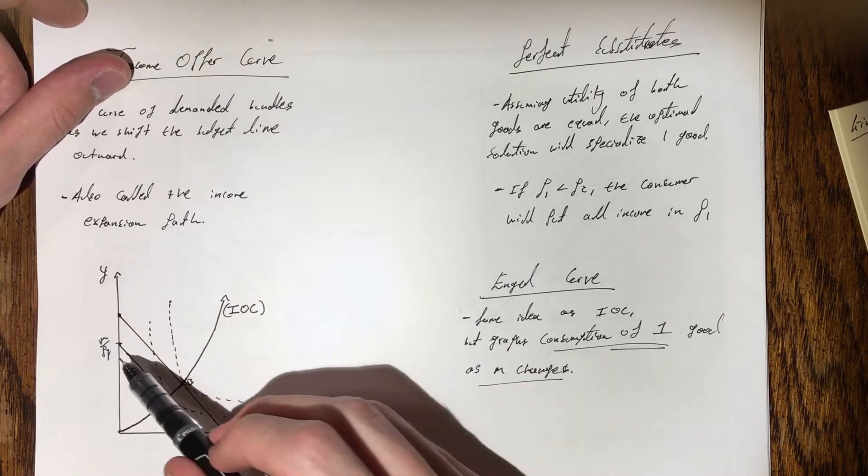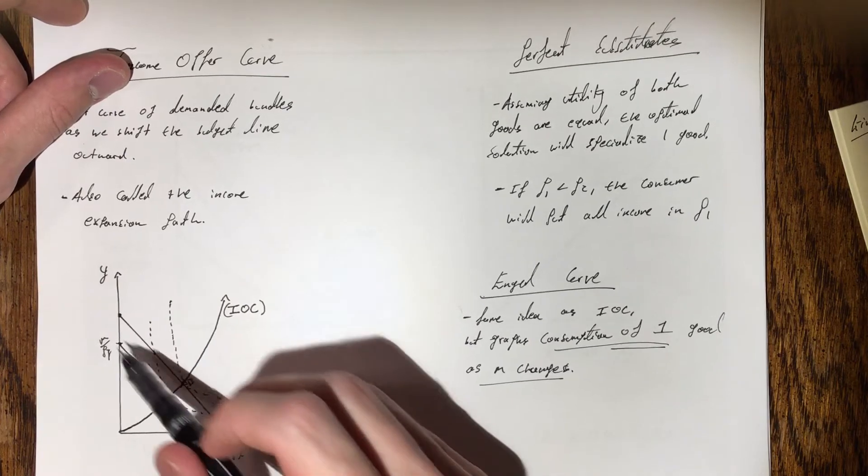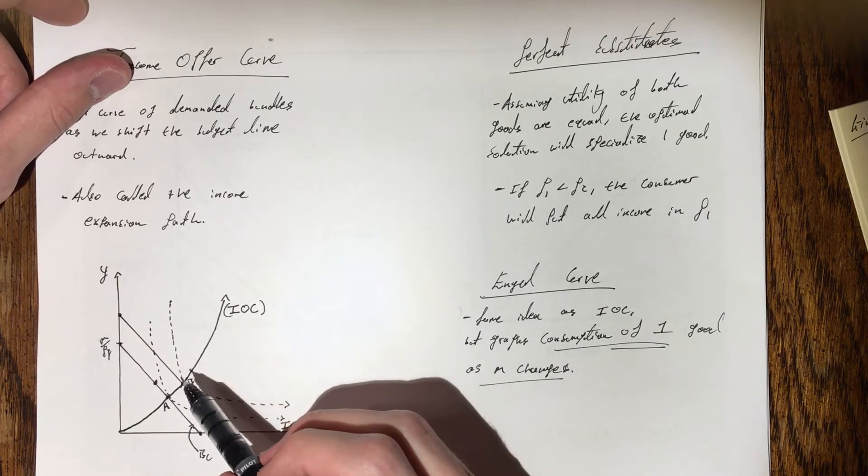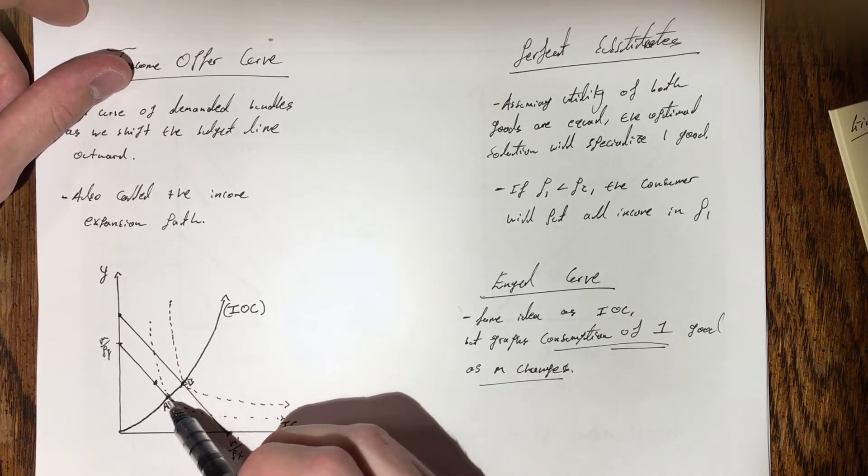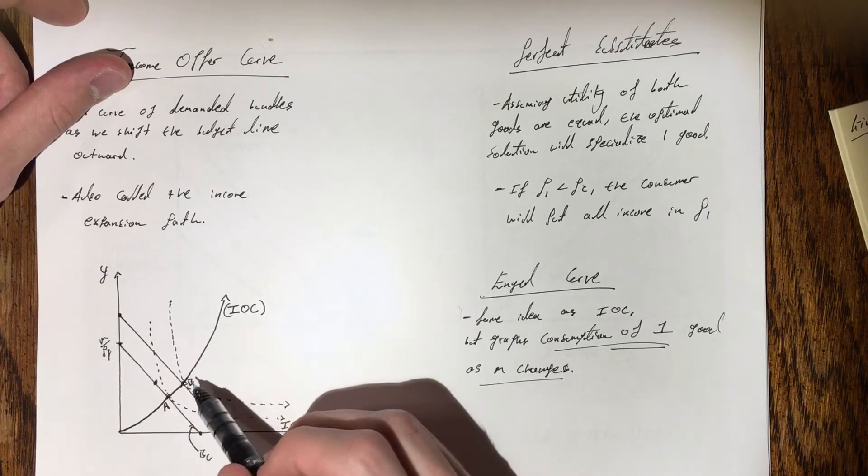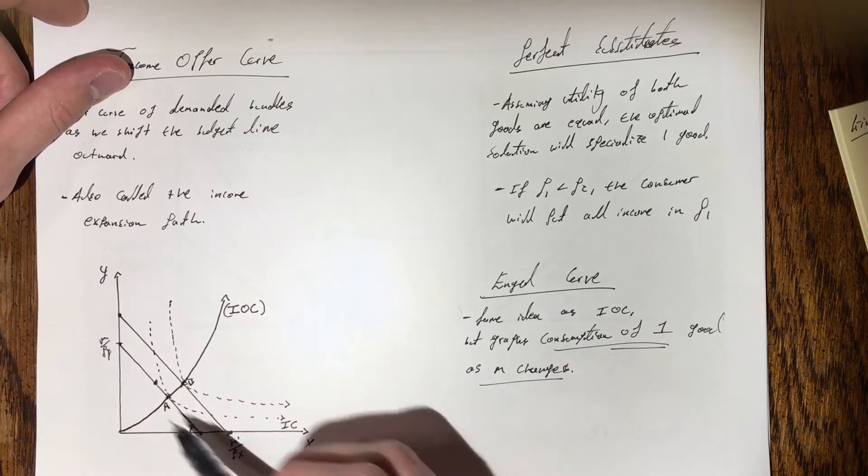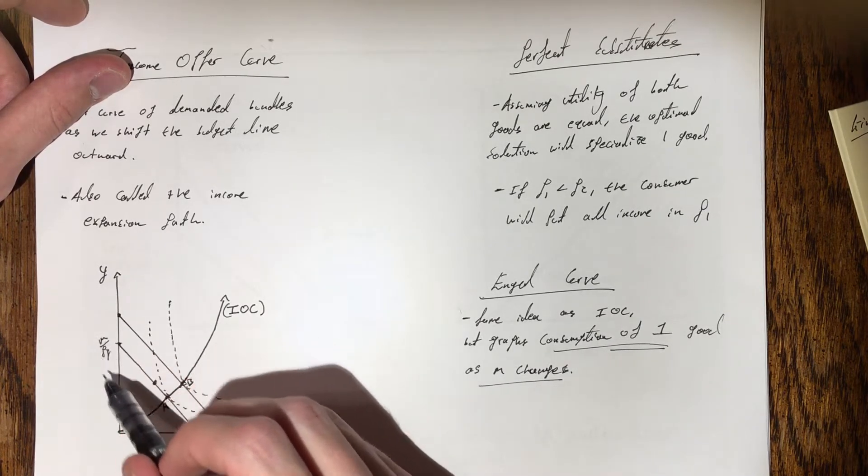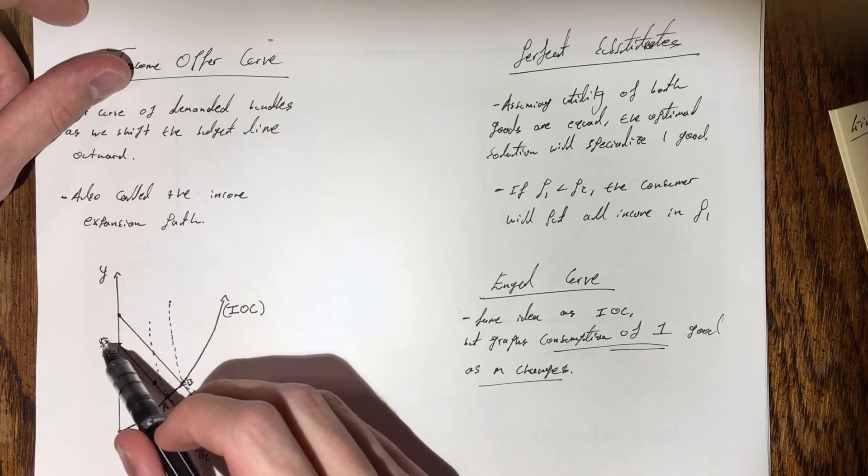Here I've given an example of what an income offer curve looks like. I've drawn two budget constraints here, two budget lines, and here A and B denote the optimal bundles at each of these budget lines. So I've drawn this budget line here with income of m, so our y-intercept would then be m over py.